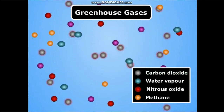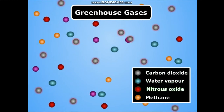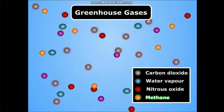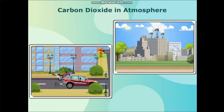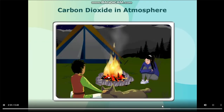Other greenhouse gases are water vapor, nitrous oxide, and methane. A lot of carbon dioxide is emitted by vehicles and industries into the atmosphere. In fact, burning of fuels also disturbs the carbon dioxide balance in the atmosphere.